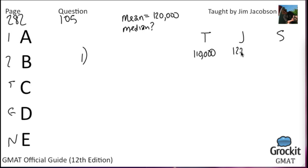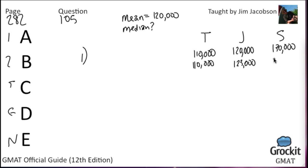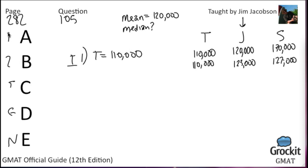With Tom's price below the average, the other two prices must compensate. The median could be $120,000 if one house is exactly at the mean, or it could be $123,000 or some other value. Because what the median is depends on what we set for the other houses, statement 1 does not give us enough information.